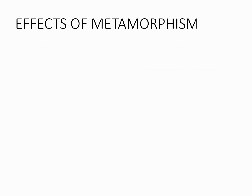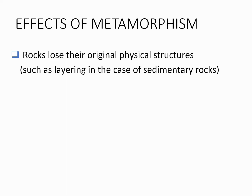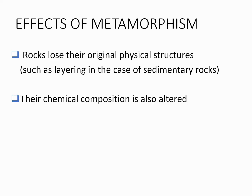What happens when rocks are metamorphosed? The effects of metamorphism: rocks can lose their original physical structures. Whatever their physical structures were — whether they were compacted in grains or they were in layers — those layers can disappear when rocks are metamorphosed. So igneous rocks or sedimentary rocks lose their original physical structures when metamorphosed. Due to metamorphism, the chemical composition of the rocks can also be altered.